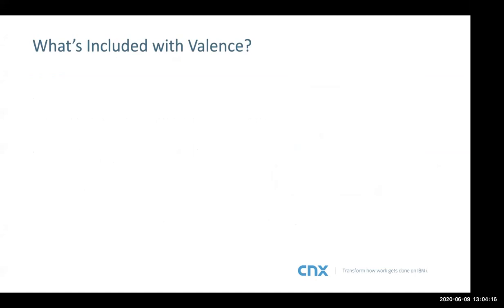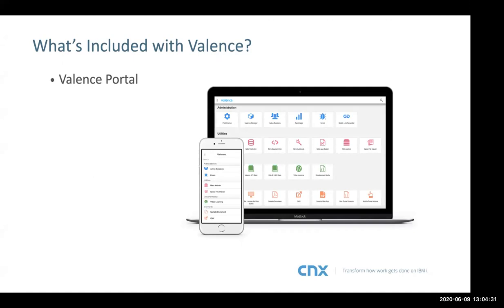Valence is a suite of things. I'm going to cover the top eight things included with Valence. Number one is the Valence portal — that handles login for your users, session management, and role-based security. Once users log in, you control what they have security access to do within there. You can see a screen of the desktop portal and the mobile portal. The mobile portal is available on the Apple store for iPhone and also on Google Play for Android.